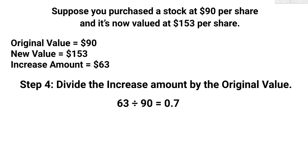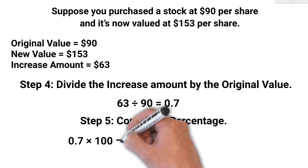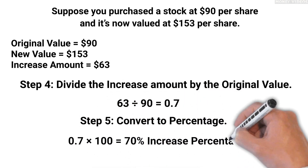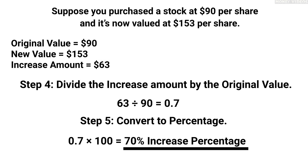Step 5: Convert to percentage. 0.7 times 100 equals 70%. Therefore, the share price rising from $90 to $153 is a 70% increase.